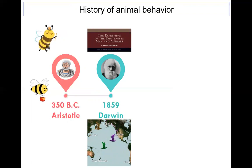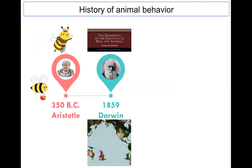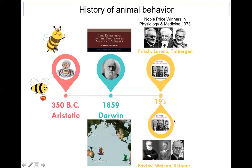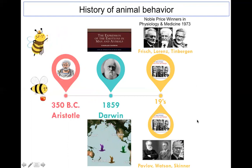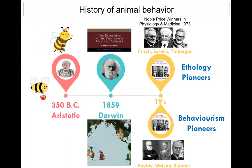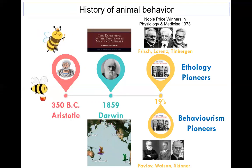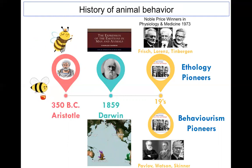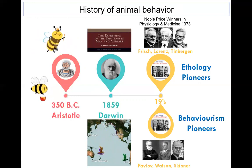From the 19th century, two schools of thought emerged. One is the pioneer school of ethology, and the other is behavioral psychology, known as behaviorism. Watson and Skinner are considered pioneers of behaviorism, while Lorenz and Tinbergen are known as pioneers of ethology. Ethology is also the study of animal behavior, and those who study it are known as ethologists.